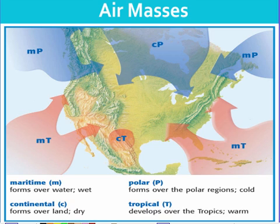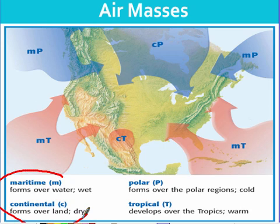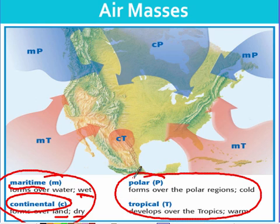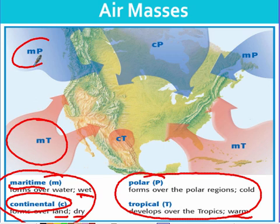Air masses have two characteristics: temperature and humidity, and that's all based on where they form. If it forms over water, it's going to be wet and that's called maritime. If it forms over land, it's going to be dry and that's called continental. For temperature, we have polar — meaning it forms near the poles — and tropical, meaning it forms near the equator and that's going to be warm. These are where the different air masses form and get their characteristics.